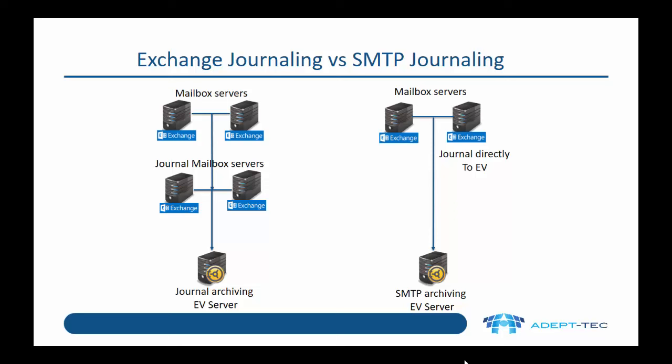On the left hand side we've got the traditional exchange journaling architecture. We have mailbox servers which will then journal to a number of journal mailbox servers, and then we have one or more enterprise vault servers which will connect to those journal mailbox servers and archive the items out of the journal mailboxes.